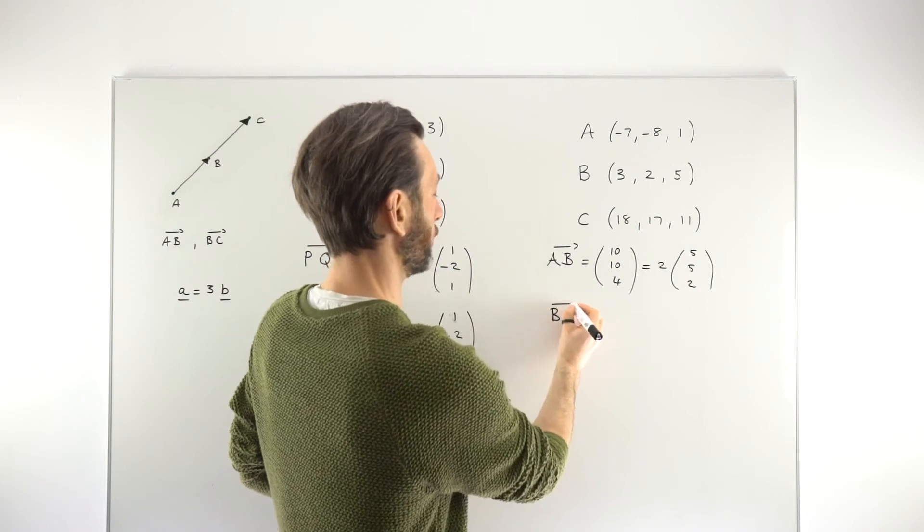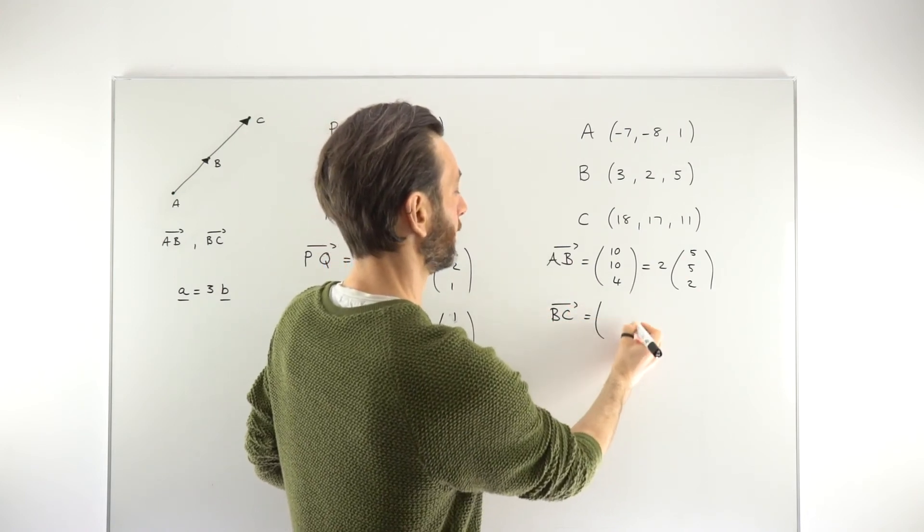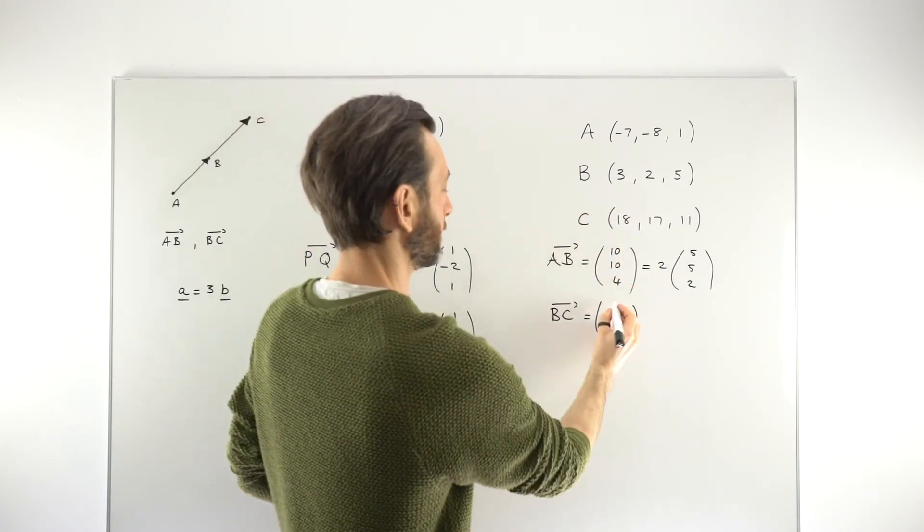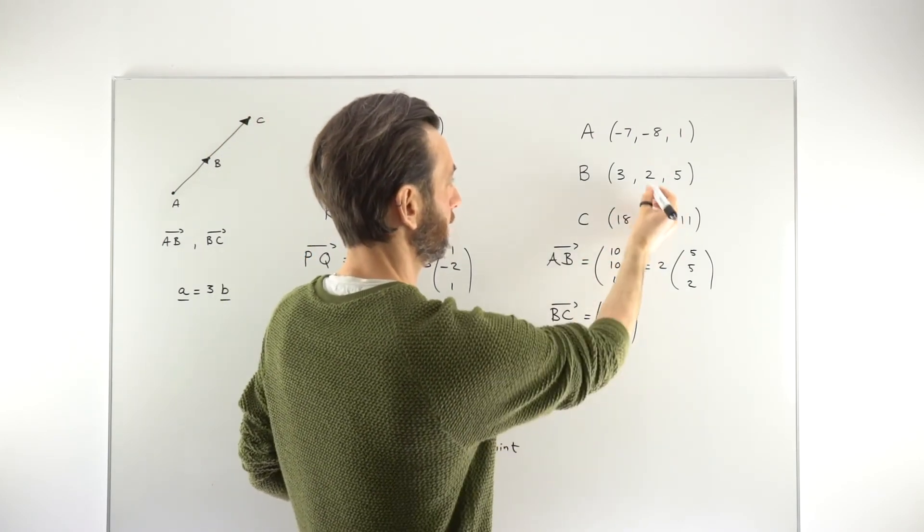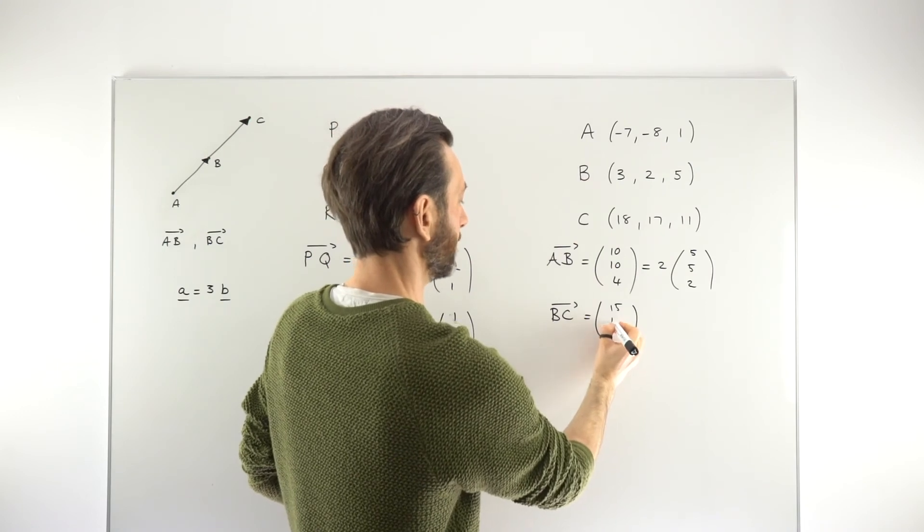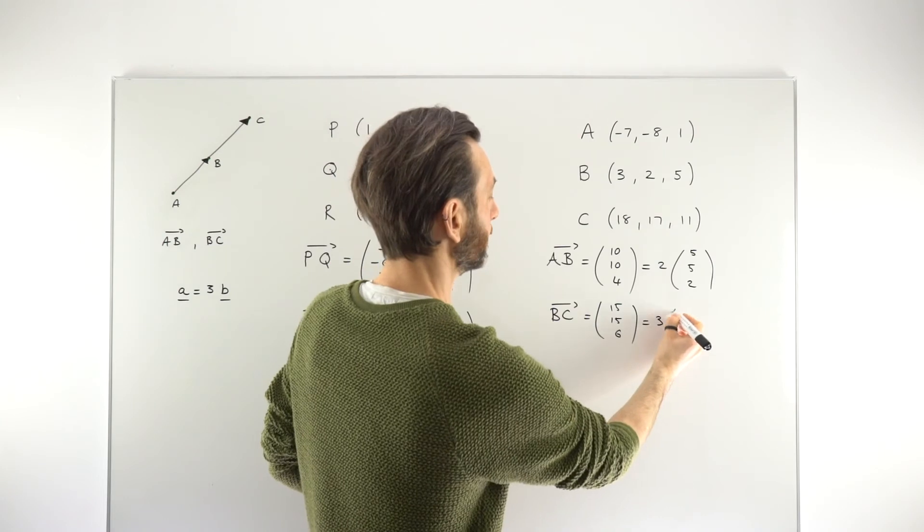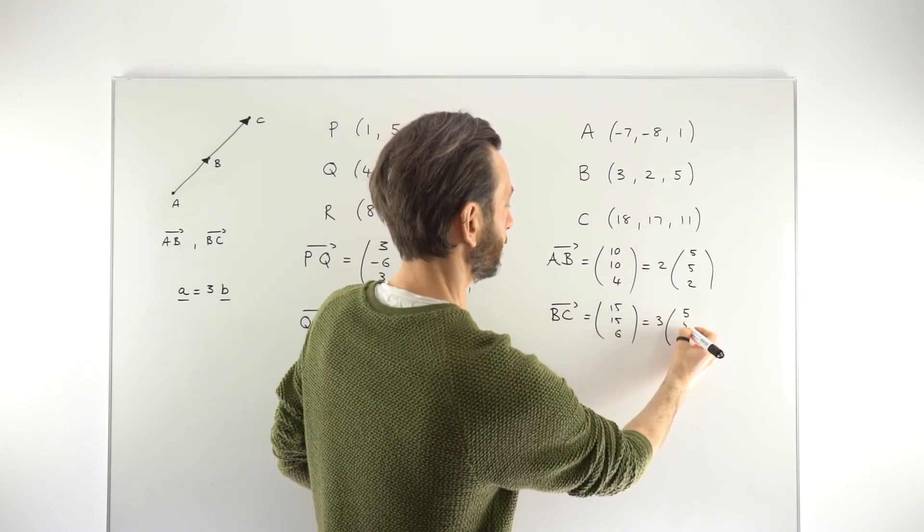So constructing your vector however you need to. So 3 to 18 is a move of positive 15. 2 to 17 is also 15, and then 6. So you can see there's a common factor of 3 there, giving the base vector 5, 5, 2. So always look for that. You should end up with that. If you're using that method, you should end up with that.